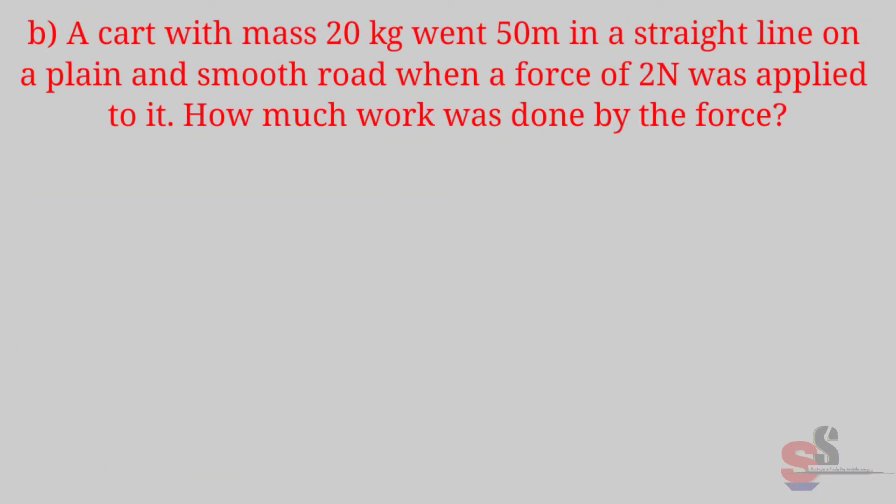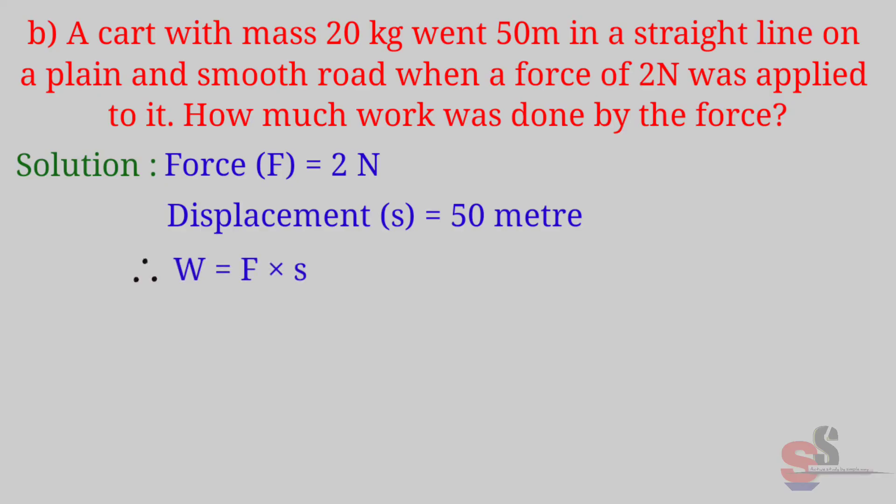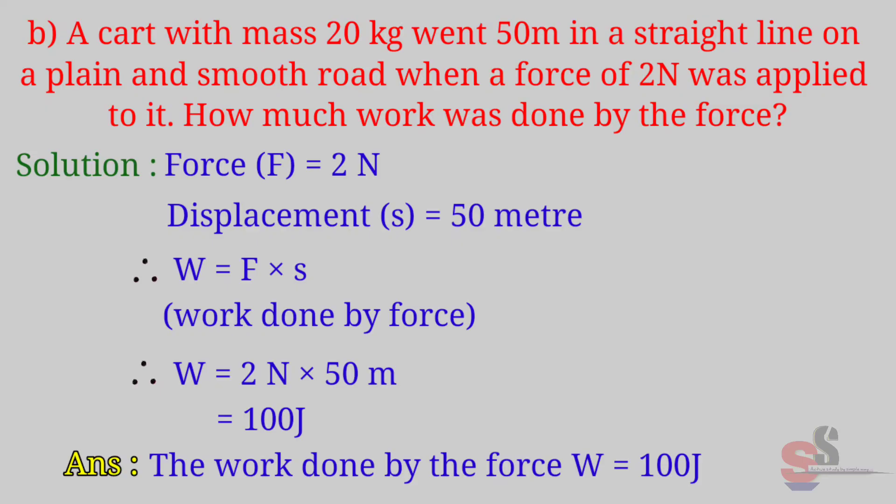Next, B. A car with mass 20 kg went 50 meters in a straight line on a plane and smooth road. When a force of 2 N was applied to it, how much work was done by the force? Solution: Here, force F is equal to 2 N. Displacement, that means S is equal to 50 meters. We know that W is equal to F into S, work done by force. Therefore, W is equal to 2 N into 50 meters is equal to 100 J. Answer: The work done by the force W is equal to 100 J.